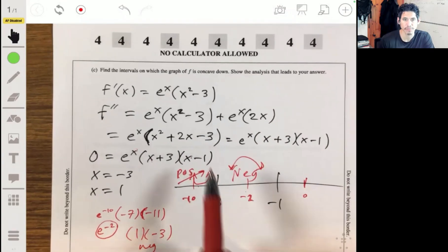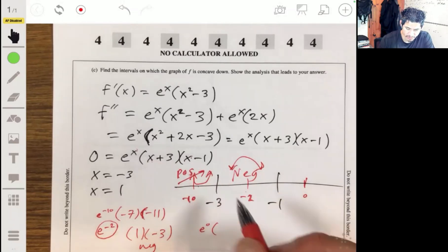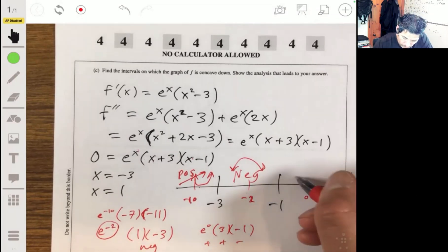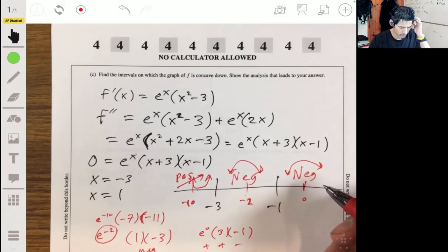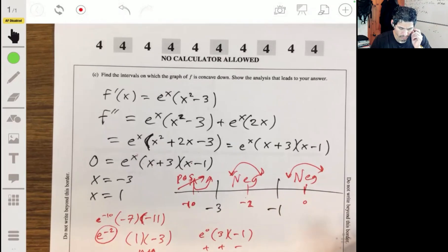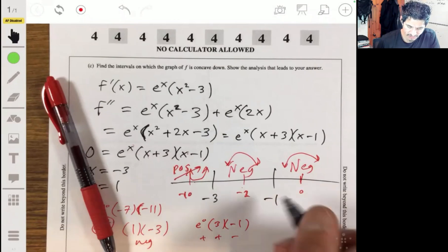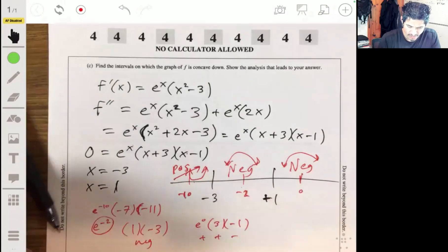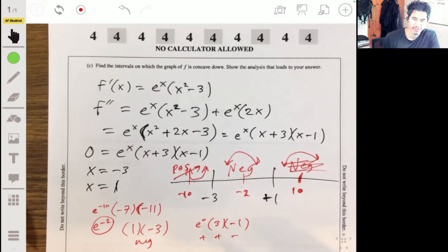And now we just check 0, e to the 0 is 1. So positive, 0 plus 3 is 3, 0 minus 1, negative 1. So we just have a negative now. Oh wait, hold on. I was like, what? This would be positive 1. I may have messed up. I have a positive 1 here. I want to just see if anybody would catch that in the comments section, but just kidding.